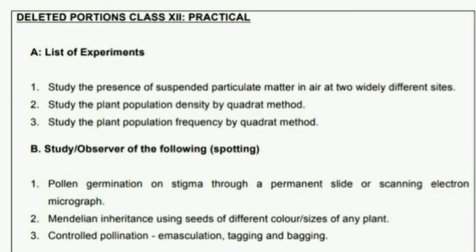Now for the spotting part, where you have seven marks: pollen tube germination as a spotting slide is deleted — note that the slide preparation practical is still intact, only the spotting of an already-prepared permanent slide is deleted. Also deleted from spotting is Mendelian inheritance using seeds of different colors or sizes, like pea seeds for monohybrid cross ratios. The third deleted spotting activity is controlled pollination — emasculation, tagging, and bagging — this is also deleted.